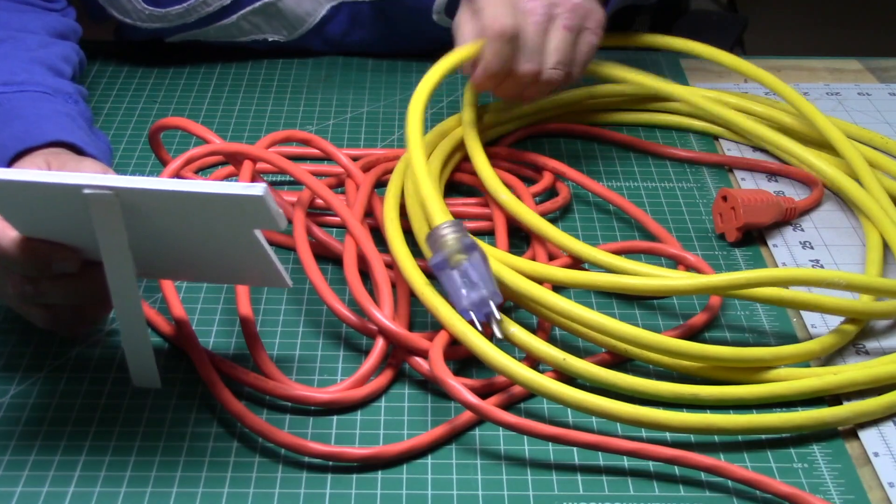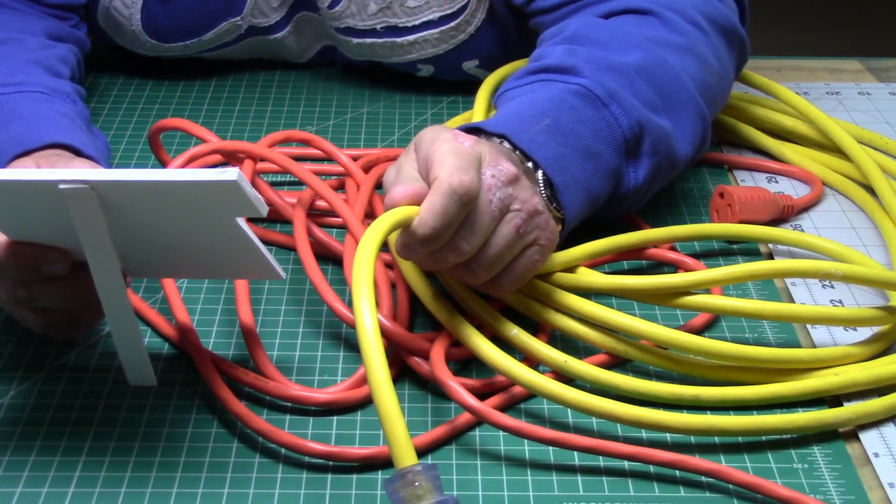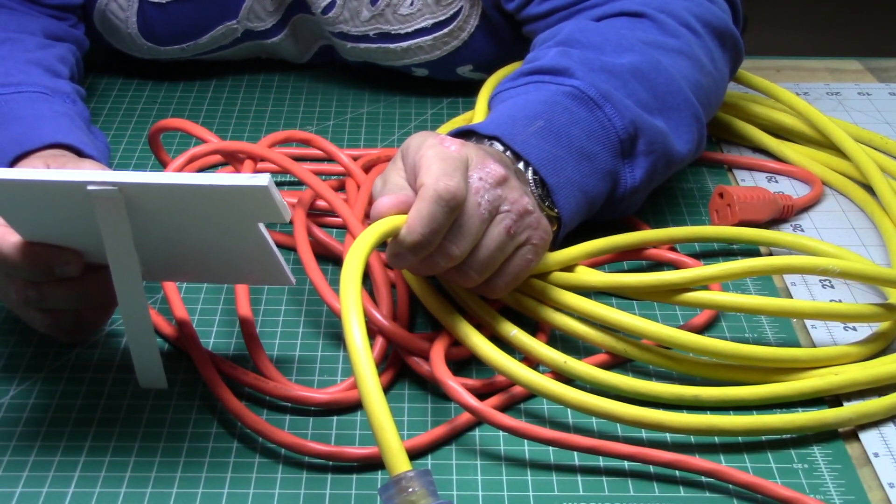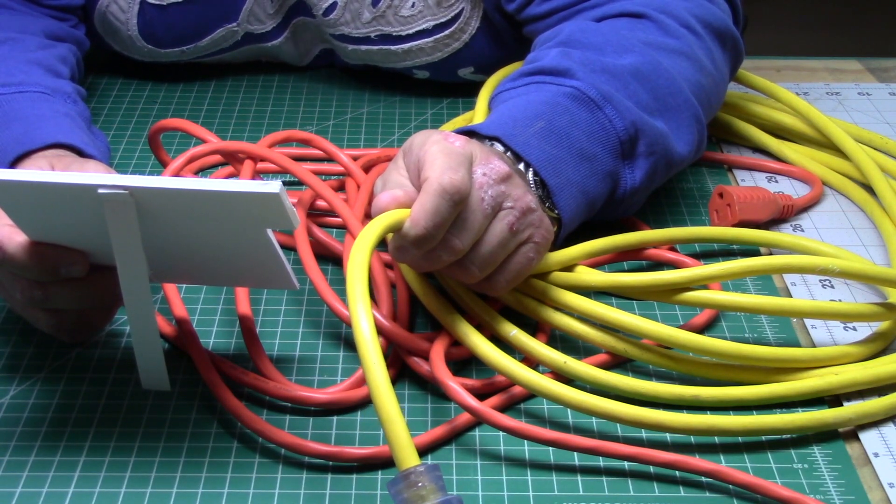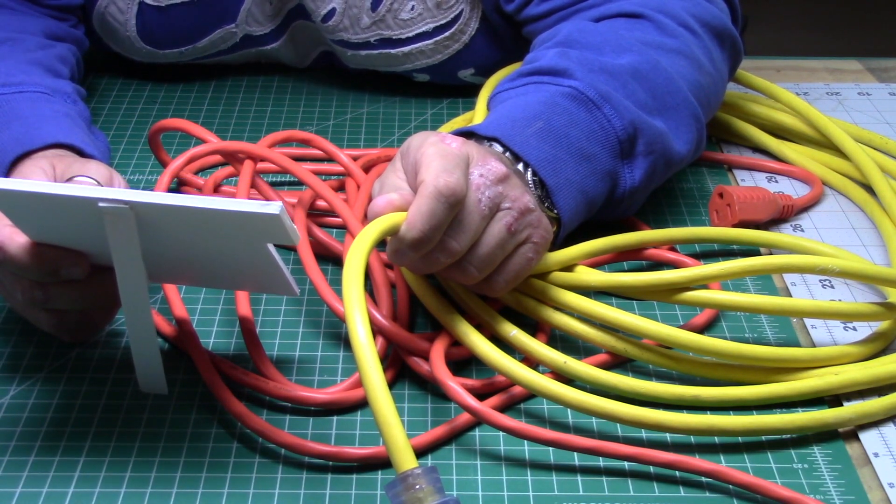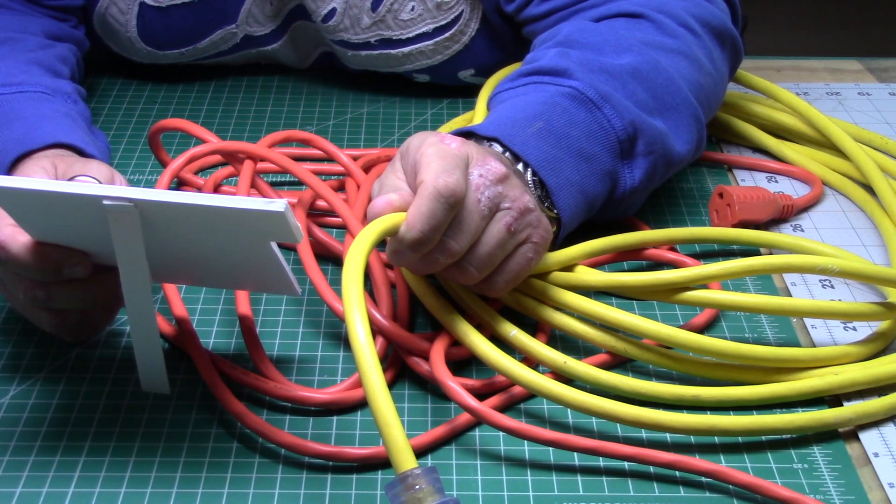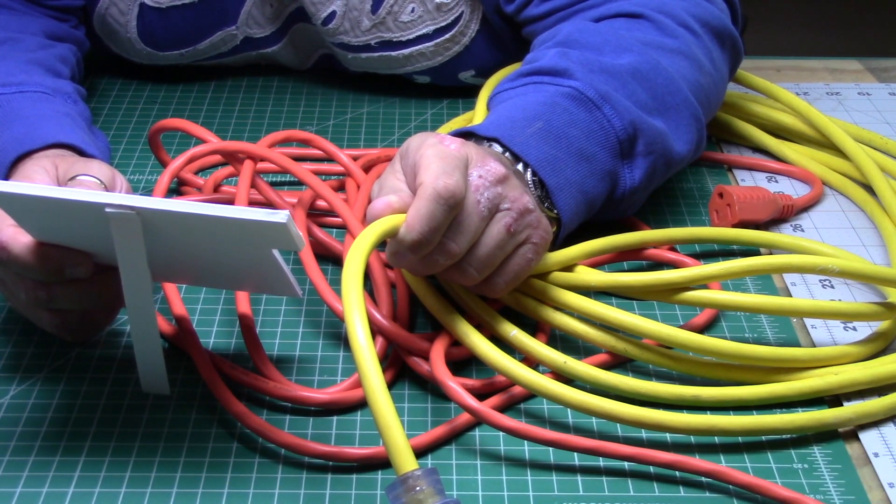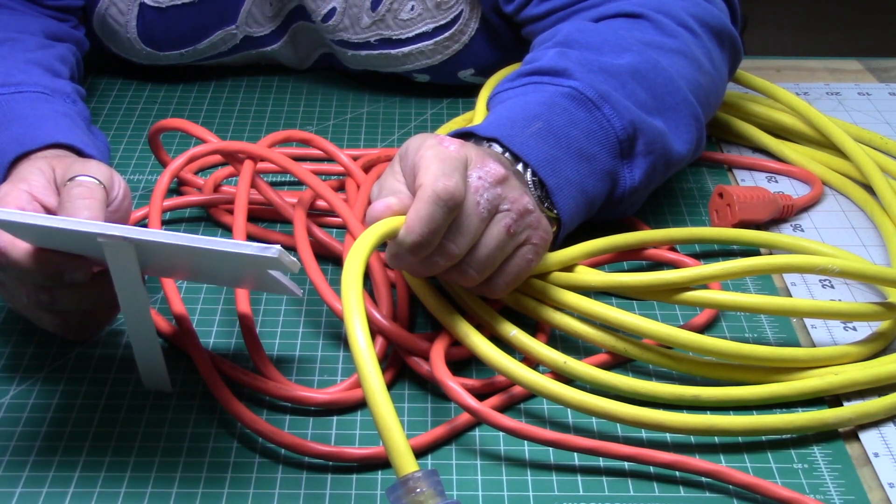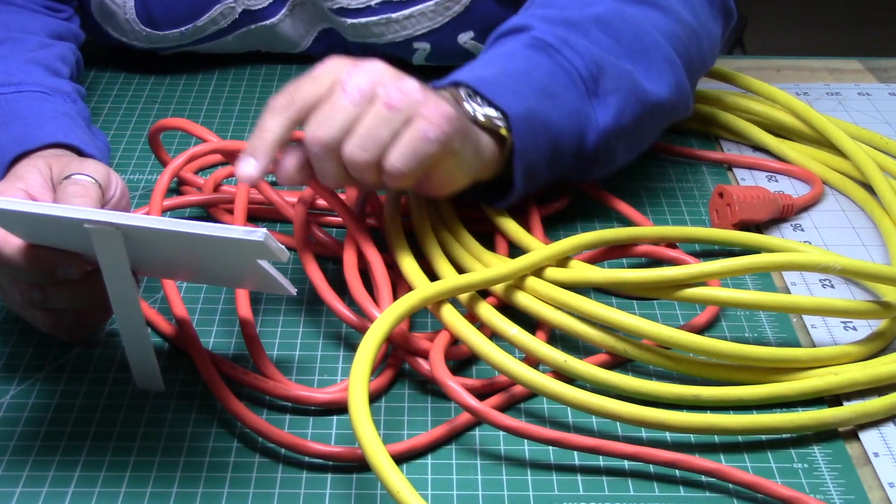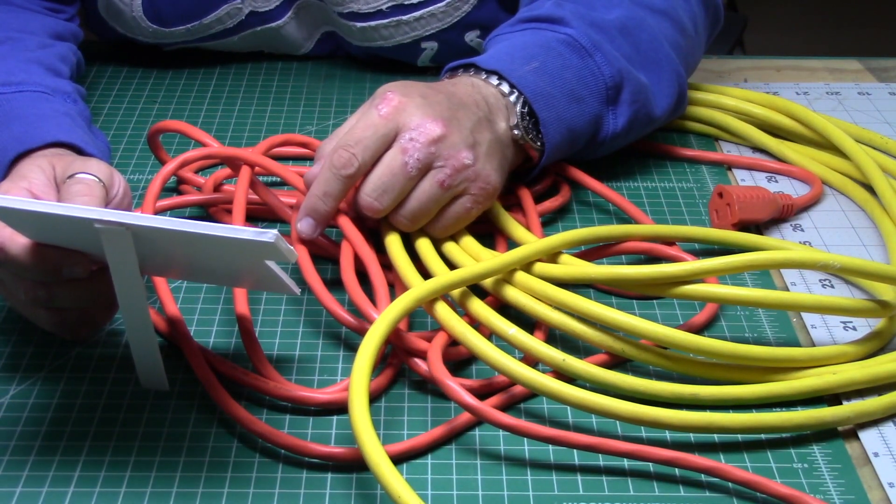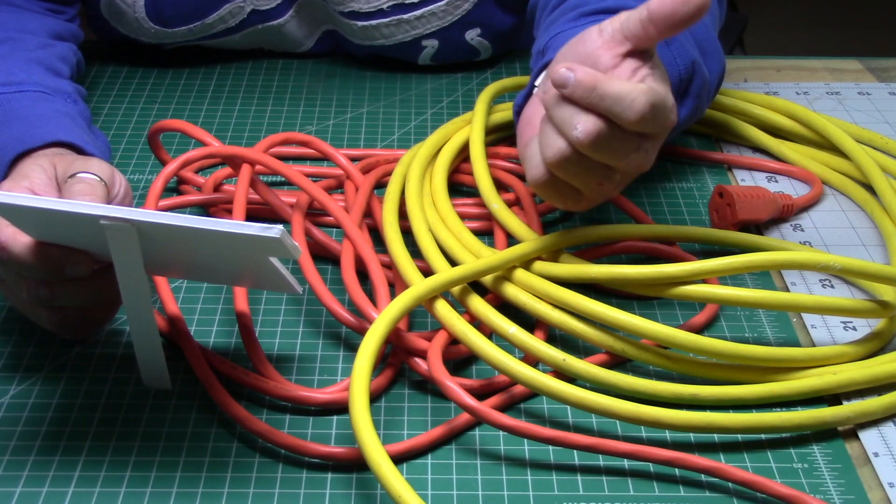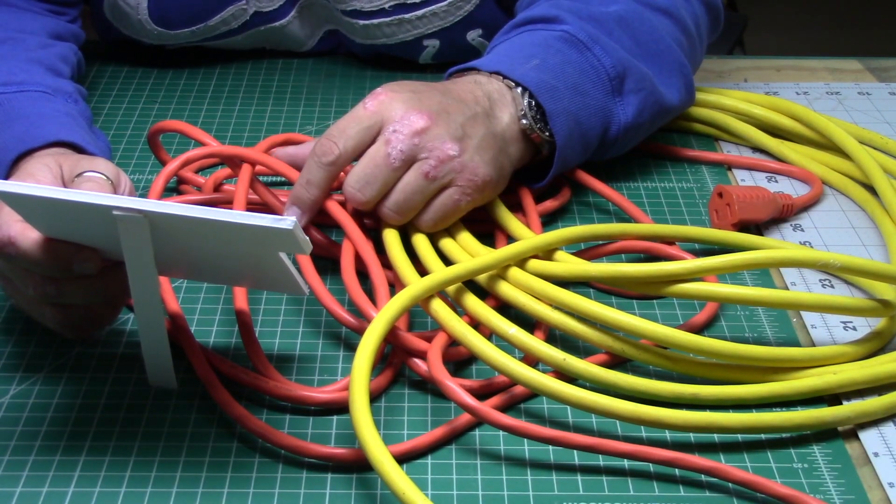Moving my way up, this is a 12 gauge cord - big heavy duty monster. I can go to 100 feet on it, but I can't go to 150 because it only does 10 amps at 150 feet. So I'd have to go to a 10 gauge cord to run my wet dry vac at 150 feet, which will handle 15 amps.